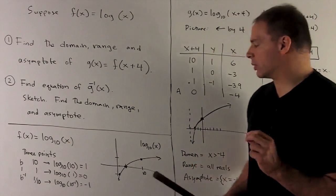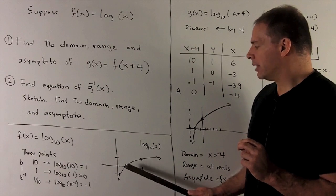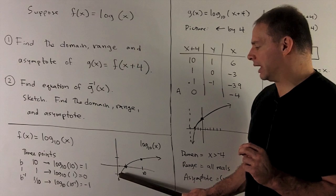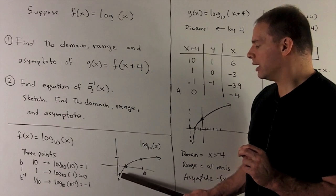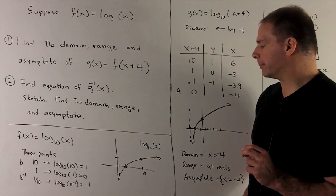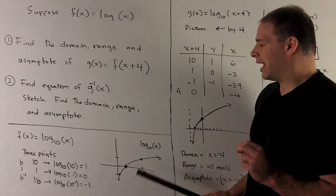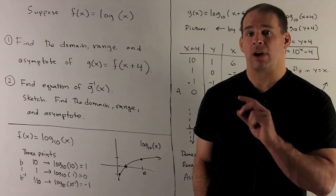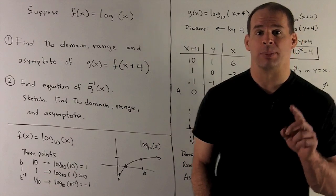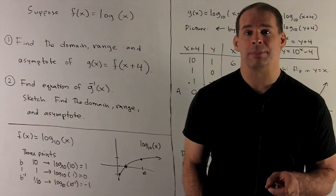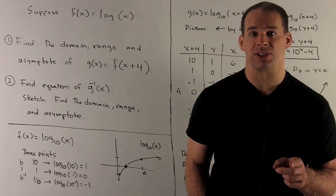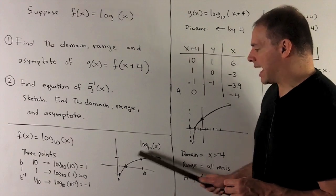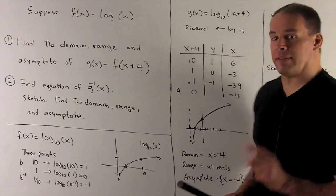Let's plot those: (10, 1), (1, 0), and then over here somewhere is my 0.1 going down by minus 1. And then the asymptote for logarithm, to any base, is going to be the vertical line — your y-axis — which is just x equal to 0. So we're going to have an asymptote there. Now I just connect my dots, and that's the graph of f of x.